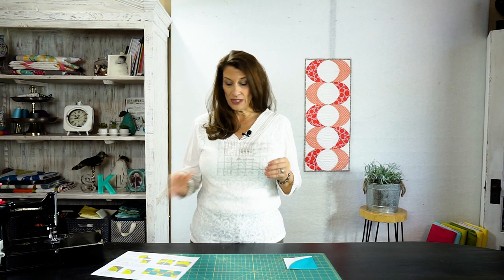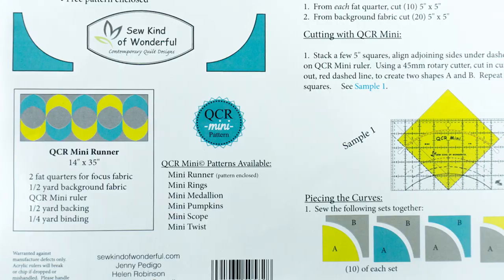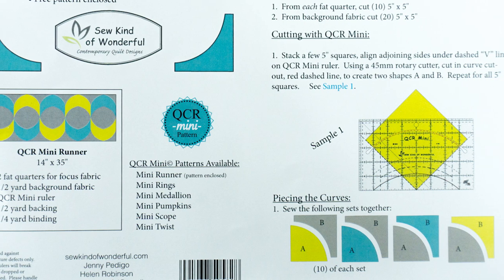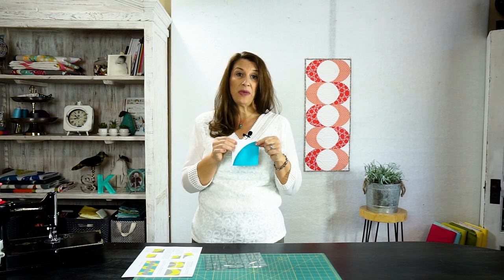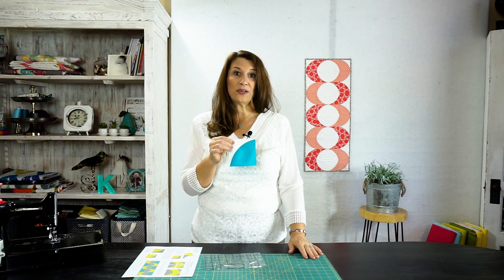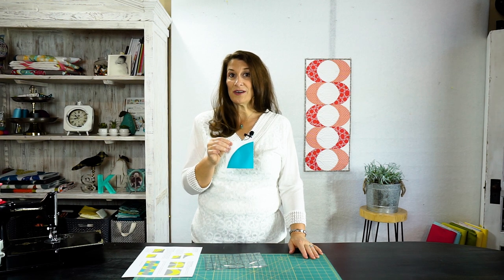When you purchase the QCR Mini Ruler, it comes with a pattern. The pattern is included on the insert that comes with the ruler. The pattern walks you through the steps of building this basic block, and we use this one block to make the Mini Runner quilt. So let's get started today making this Mini Runner block.